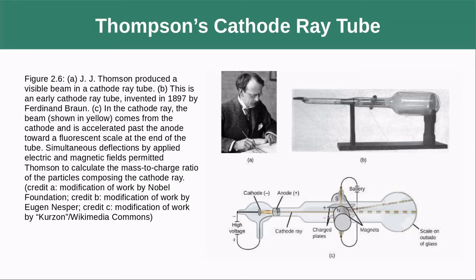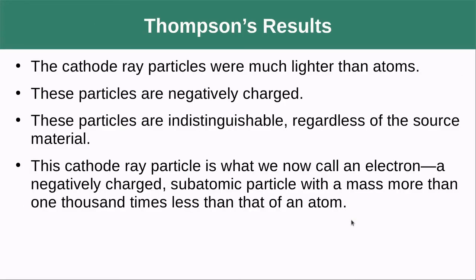Here's an image of the kind of setup he was using — he focused the cathode ray and then deflected it using charged plates. Thomson discovered that his cathode ray particles were much lighter than atoms, had a negative charge (which is why they deflected away from negative and toward positive), and were indistinguishable regardless of the source material, meaning they were inside every kind of metal he used. This cathode ray particle is what we now call the electron.